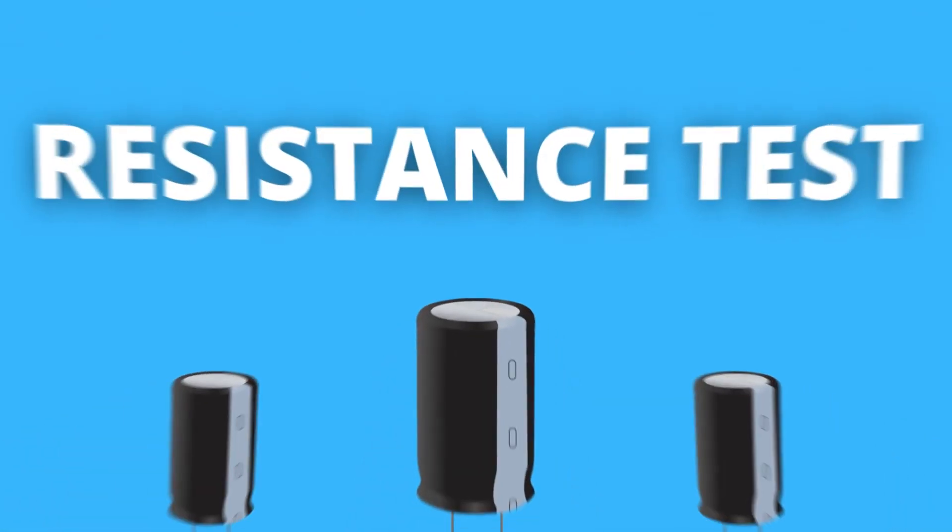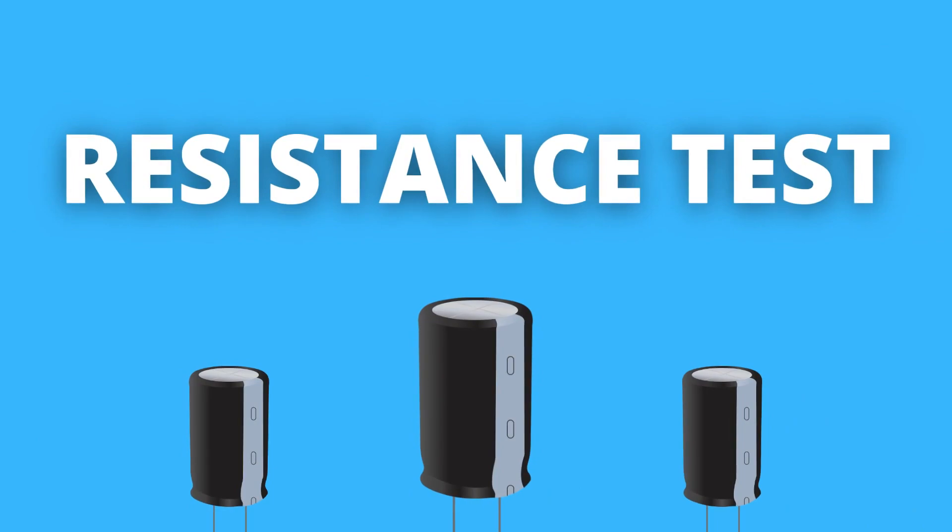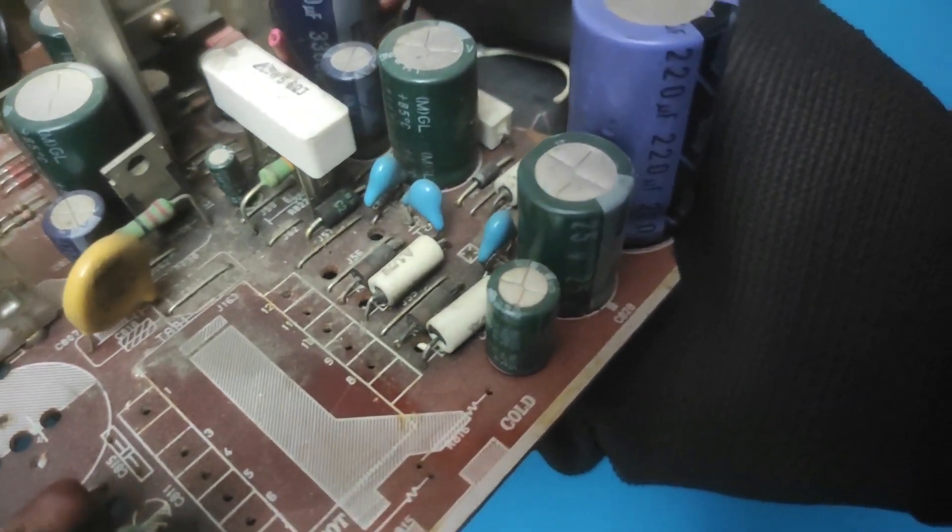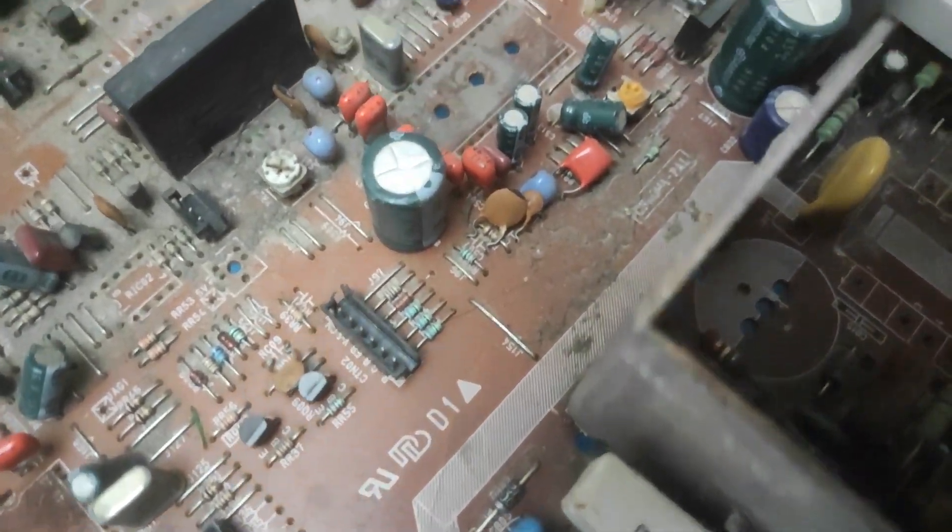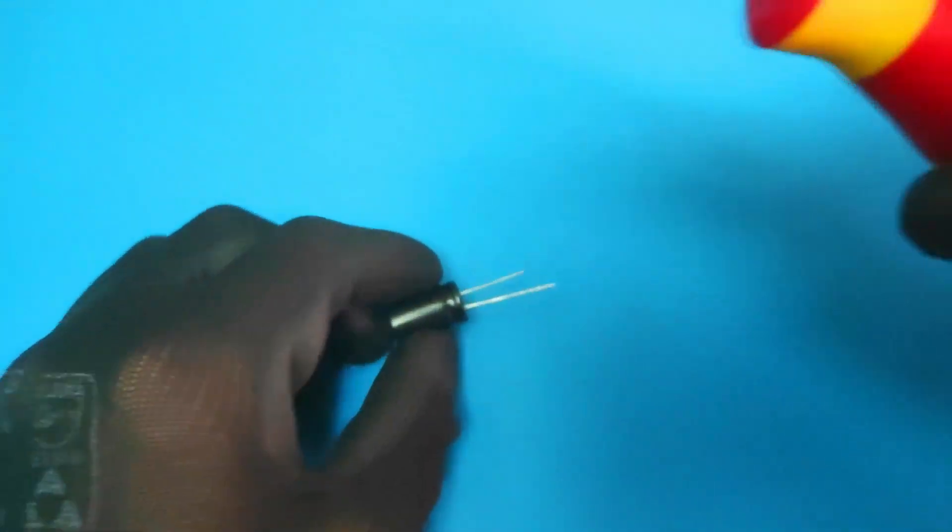Let's start with the resistance testing. The first thing you need to do is remove the capacitor from the circuit. You can do this with the help of a soldering iron. The second step is to discharge the capacitor. There are several ways to do this.